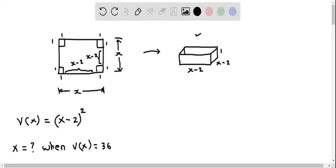Here we see that an open box is made by cutting four squares from each corner of a square sheet of metal whose side length is x feet.